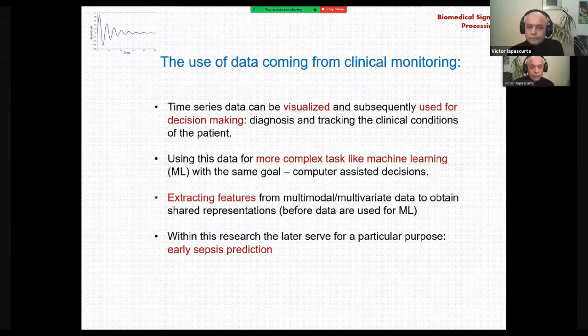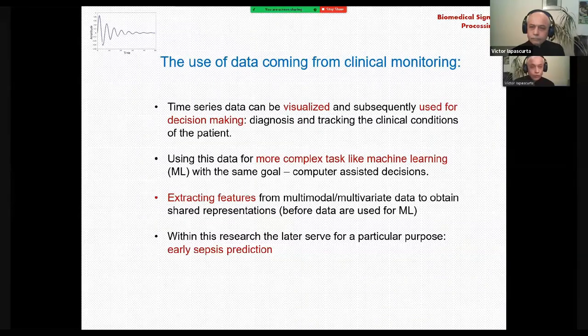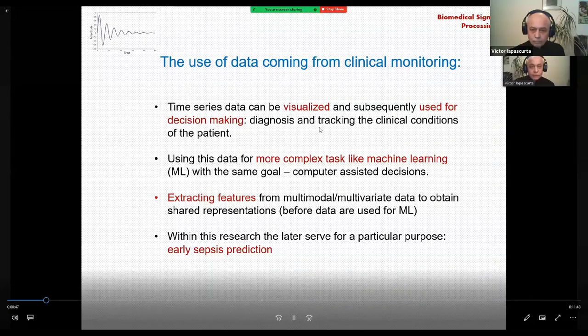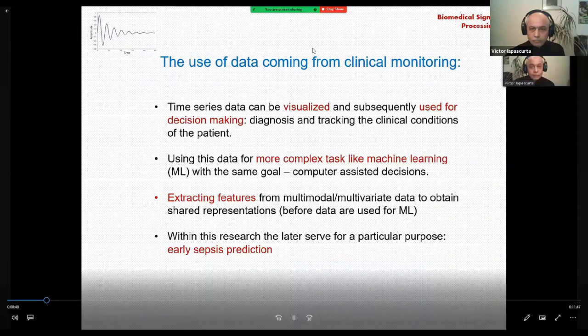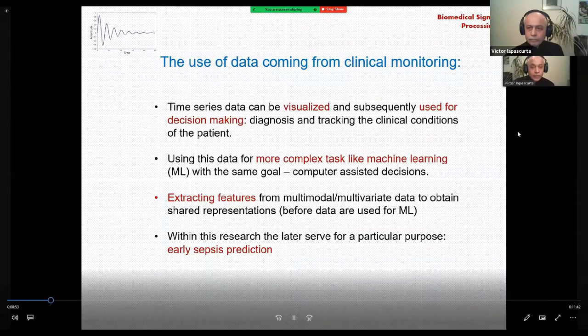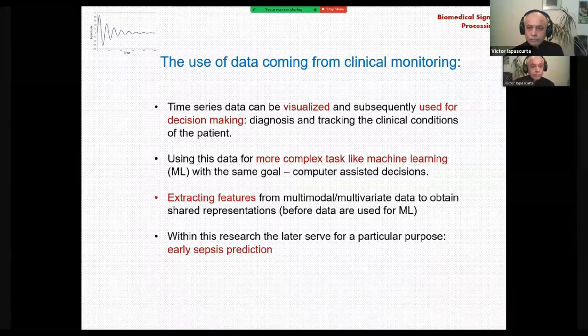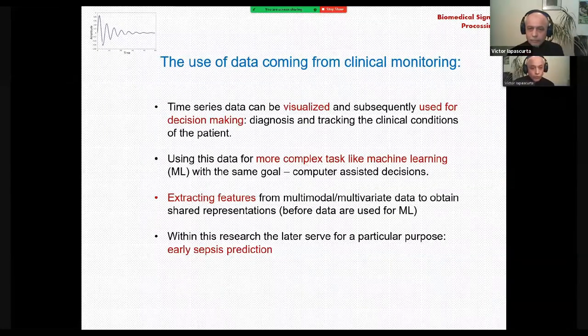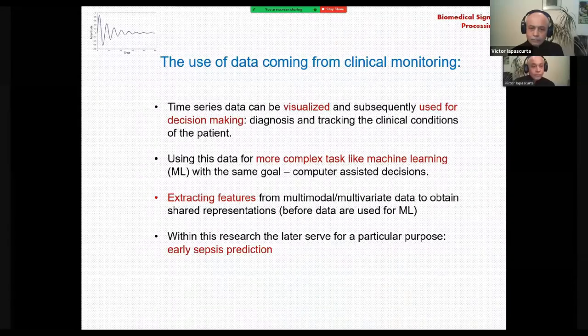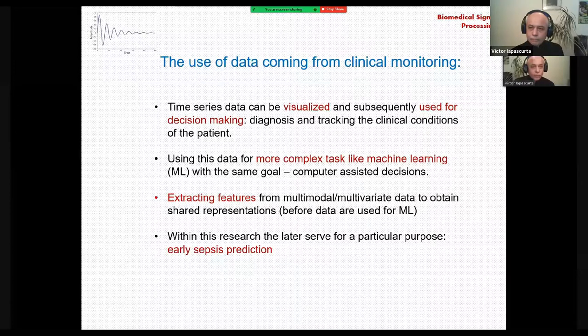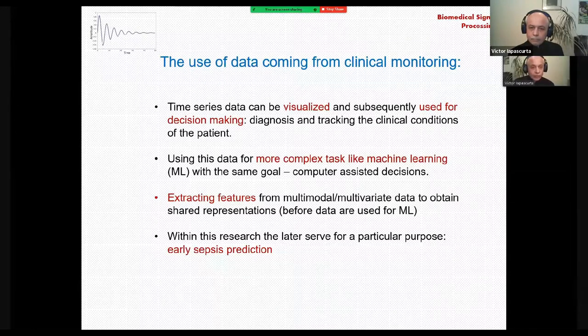What can we do with this data? First of all, we can visualize it and use for diagnosis and treatment. Second, we can use this data for more complex tasks like, for instance, machine learning, but with the same goal, computer-assisted decisions. For this, we will need to extract features from the data to obtain shared representation and finally pass this transformed data to a machine learning algorithm.